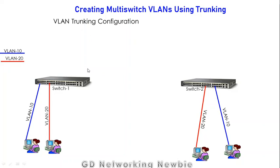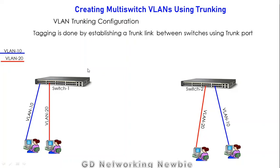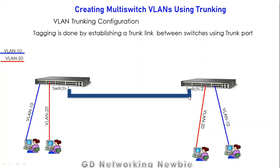Now let's see how to configure that. Tagging is done by establishing a trunk link between switches. The concept of a trunk comes from the old telephone system, where multiple users could share and call at the same time using a trunk line. Here it means that users from both VLAN 10 and VLAN 20 can send their traffic using the same trunk link. This trunk link is established between switches using trunk ports.